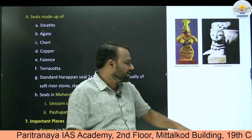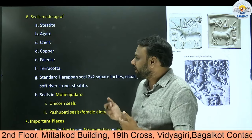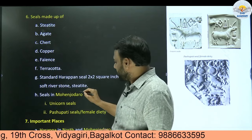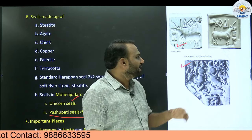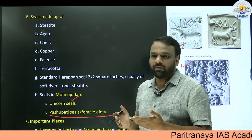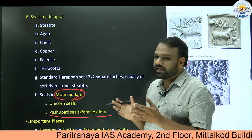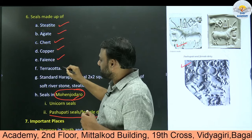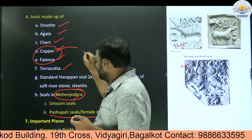Next, seals. In modern day, seals are used for trading purposes to establish authenticity. During the Indus Valley period also, they used seals to establish authenticity when making business with others. Examples include unicorn seals and Pashupati seals found at Mohenjo-daro. At a superficial level, we need to understand that Pashupati seals and unicorn seals pertain to the Indus Valley period and can be found at Mohenjo-daro. Questions can be framed about what materials were used to make seals — they were made up of steatite, agate, chert, copper, faience, and terracotta.